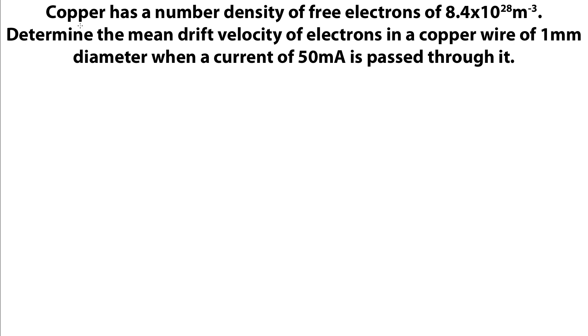So here's a little example. So we're told, copper has a number density of free electrons of 8.4 times 10 to the 28 per meter cubed. So in every cubic meter, we have 8.4 times 10 to the 28 free electrons in copper metal. And we're asked to determine the mean drift velocity of the electrons in a copper wire with 1 millimeter diameter when a current of 50 milliamps is passed through it. So from the last page, we had I equals N A V E. So if we're after the drift velocity, that's going to be V equals I over N A E.